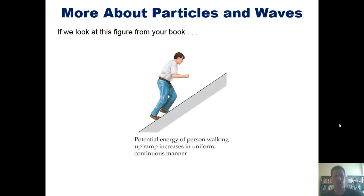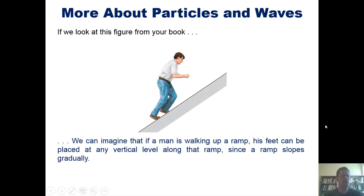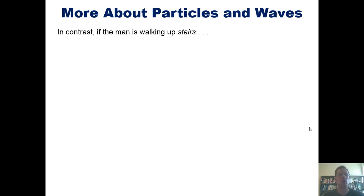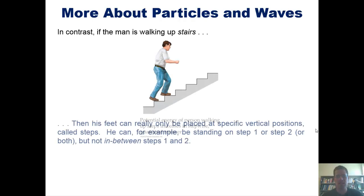If we look at this figure from our book, we can imagine that if a man were walking up a ramp, his feet can be placed at any vertical level along this ramp since a ramp slopes gradually. However, if we contrast this with a man that's walking up stairs, then his feet can really only be placed at specific vertical positions called steps. He can, for example, be standing on step one or step two, but not in between steps one and two.